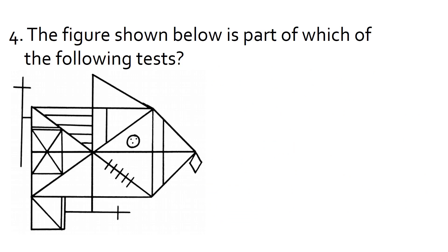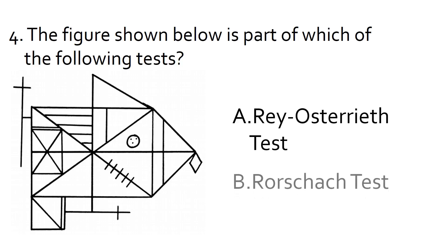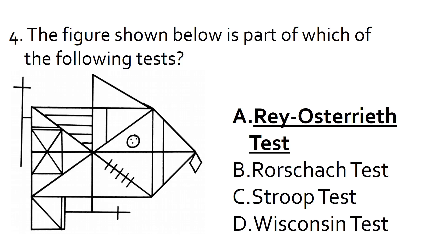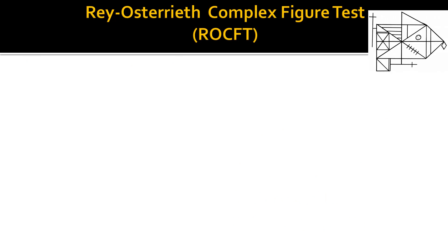Question 4. The figure shown below is part of which of the following tests? Is it the Rey-Osterrieth test, the Rorschach test, the Stroop test, or the Wisconsin test? The correct answer is A: the Rey-Osterrieth test.